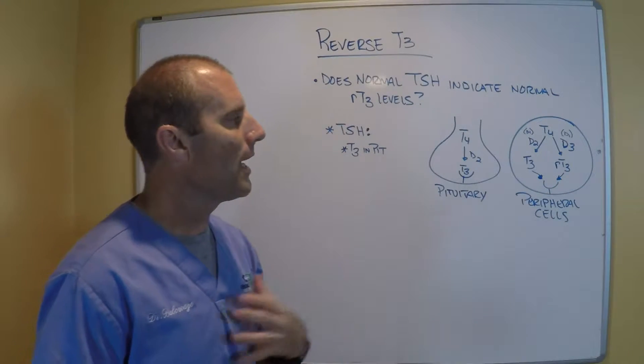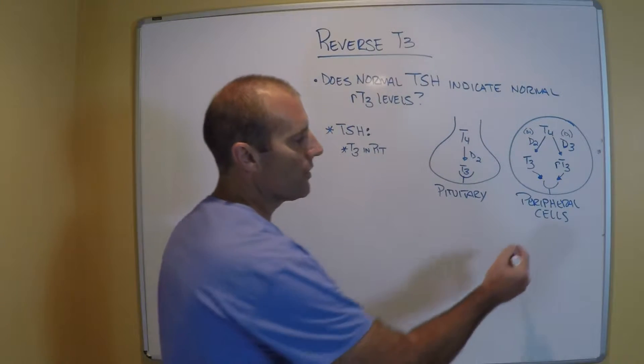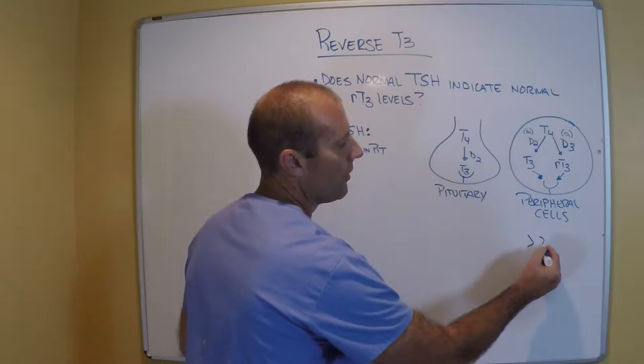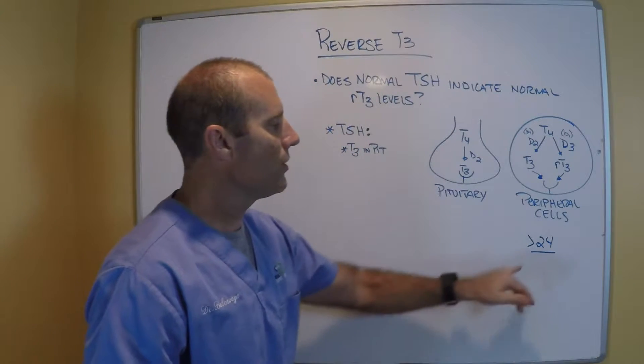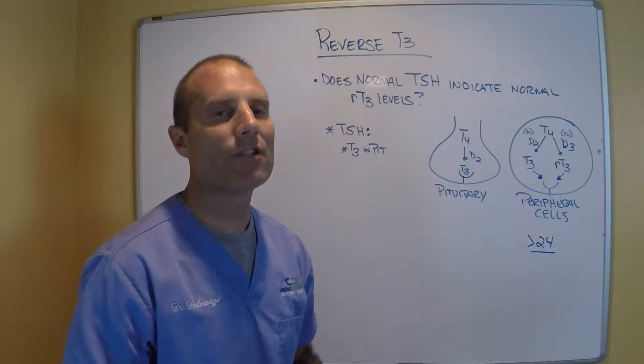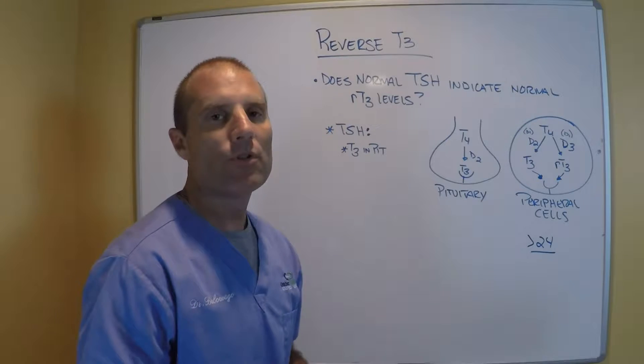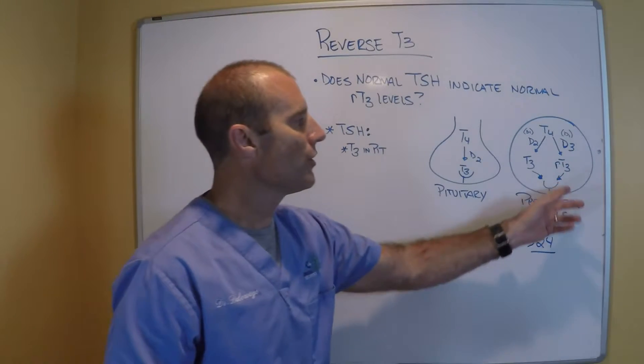Interesting, when I ran a thyroid panel on this patient, her reverse T3 was greater than 24. 24 is the lab high. So in this situation, the patient's reverse T3 was actually in the 30s. So this person was really over converting that Synthroid to reverse T3.